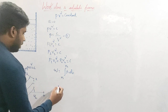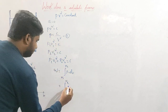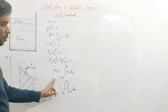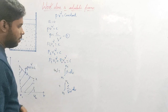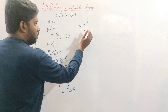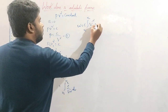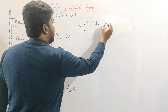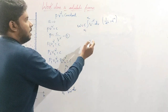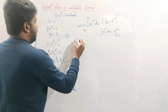Substituting the value of p, we get the integral from V1 to V2 of (C / V^γ) dV. Since C is a constant, we bring it outside the integral. Taking V^γ to the numerator, we get W = C times the integral from V1 to V2 of V^(−γ) dV. Using the integration formula: the integral of x^n dx = x^(n+1) / (n+1).